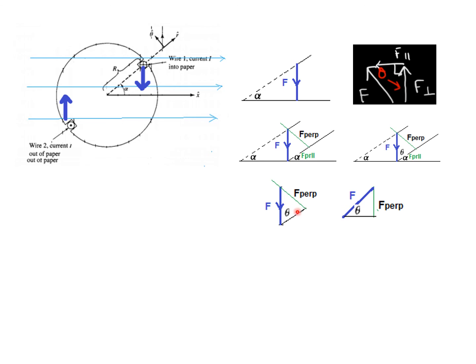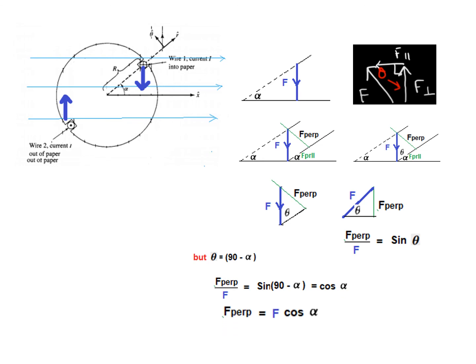Rotating the triangle slightly for clarity and applying the Pythagorean geometry: F_⊥ / F = sin(θ). Since the field is now horizontal, θ = 90° − α, so sin(90° − α) = cos(α). Therefore F_⊥ = F·cos(α) for this new field direction.